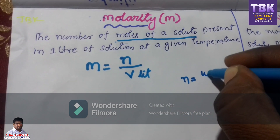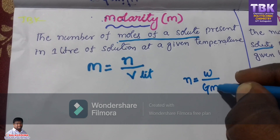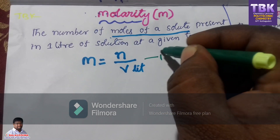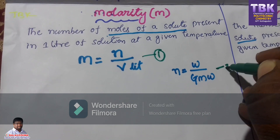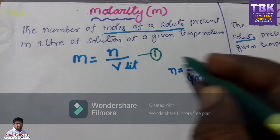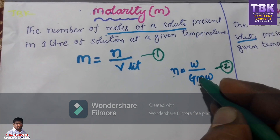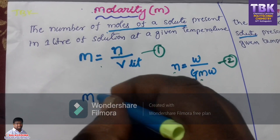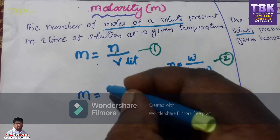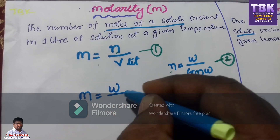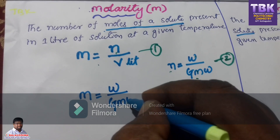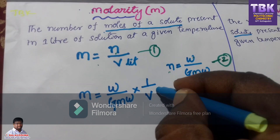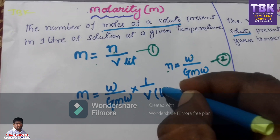Number of moles n equals weight divided by gram molecular weight — let us call this equation 2 and the molarity formula equation 1. I am substituting equation 2 into equation 1, because n equals W by gmw. So M is equal to W by gmw, multiplied by 1 by V in liters.